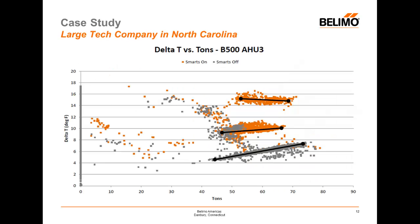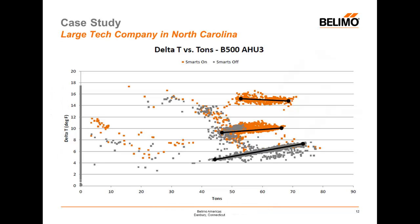Let's take a look at one last case study. It comes from a large technical company in North Carolina. We have been asked not to use their name for marketing purposes, but they have been willing to share their data. What you're looking at here is a graph where we are plotting tons of cooling across the x-axis and the corresponding Delta-T on the y-axis. The three separate clouds of information represent three different control modes. With the energy valve in place on a single air handler, it was run first in position control mode — basically a standard control valve where each value of the control signal controls how open or closed the valve is, similar to any characterized ball valve or globe valve.